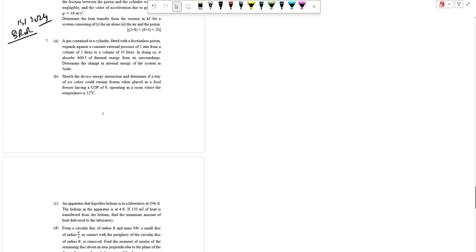A gas contained in a cylinder fitted with frictionless piston expands against the constant external pressure of 1 atmospheric unit with respect to volume 500 joule. Determine the change of internal energy in the system in joule.